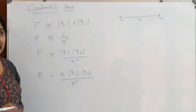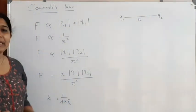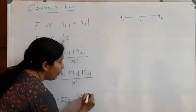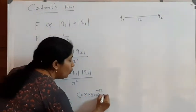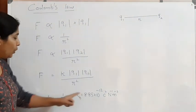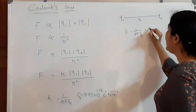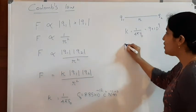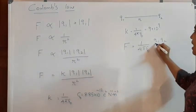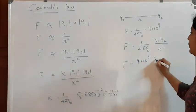Here K is the constant of proportionality and its value is K = 1/(4π·ε₀). Here ε₀ is known as the permittivity in air or free space and its value is ε₀ = 8.85 × 10⁻¹² C² N⁻¹ m⁻². On substituting the value of ε₀, we get K = 1/(4π·ε₀) = 9 × 10⁹. Therefore, Coulomb's law can be written as F = (1/4π·ε₀) × Q1·Q2/R², or F = 9 × 10⁹ × Q1·Q2/R².